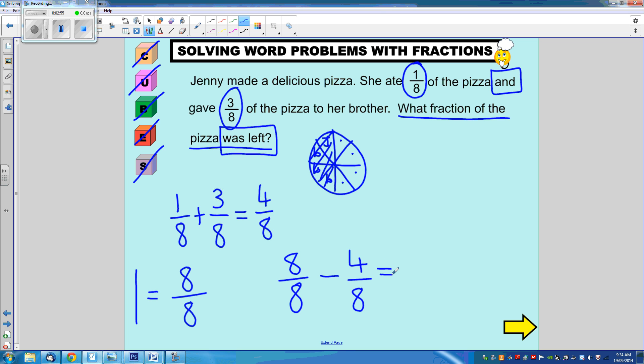And again, our denominators are the same so we can just subtract across the top. 8 take away 4 is 4. And we come up with 4 eighths.